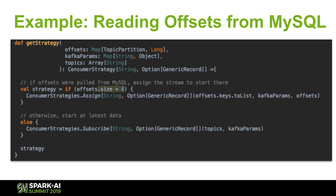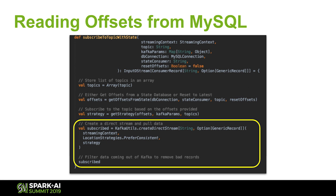That gives us the ability to recover, but also the ability to replay. If we have a business case where we need to reprocess some streaming data, we can do that as long as you have enough retention in your Kafka topic. Then you just do a createDirectStream, throw in your strategy that has your offsets in it, and you're done — you're off to the races.